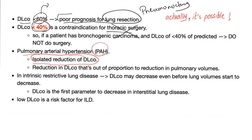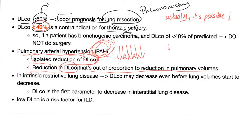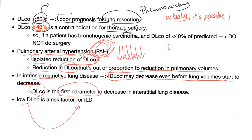In pulmonary arterial hypertension, you might find a reduction in DLCO that is out of proportion to the reduction in pulmonary volumes — the spirometer shows only a slight decrease, but the DLCO is dramatically low. In cases of intrinsic restrictive lung disease, DLCO may decrease even before lung volumes start to decrease — the spirometer shows normal results, but DLCO picks up the real problem. DLCO is the first parameter to decrease in interstitial lung disease, and low DLCO is a risk factor for developing interstitial lung disease.